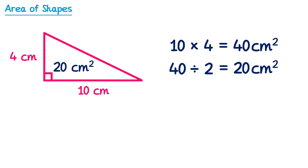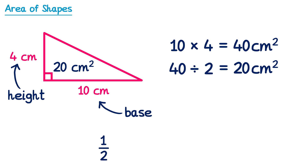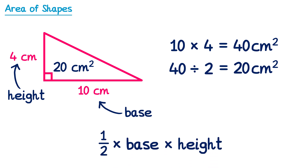So to find the area of a triangle, you can multiply the base by the height and then divide this by 2. Another way to write this formula is to write the dividing by 2 first, so we sometimes write it as one half multiplied by the base multiplied by the height.